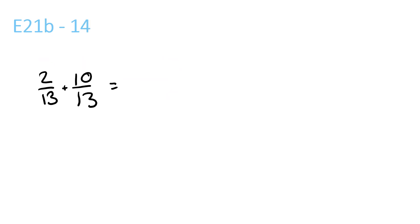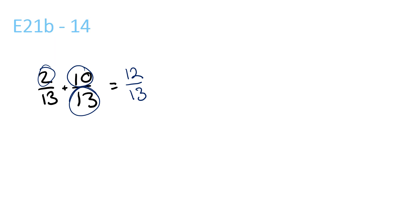Last question. 2 plus 10 is 12 over 13 — the bottom one stays the same — is equal to 12 over 13. Because the top one is actually smaller than the bottom one. So that's your answer. You can't simplify it, you can't reduce it, or do any fancy thing.